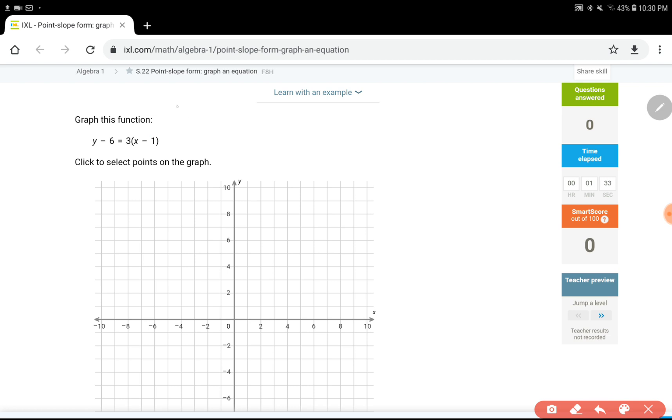Let's get started. The point-slope form is, in general, Y minus Y1 equals M times X minus X1. In this case, M is the slope, and X1, Y1 is a point on the line.